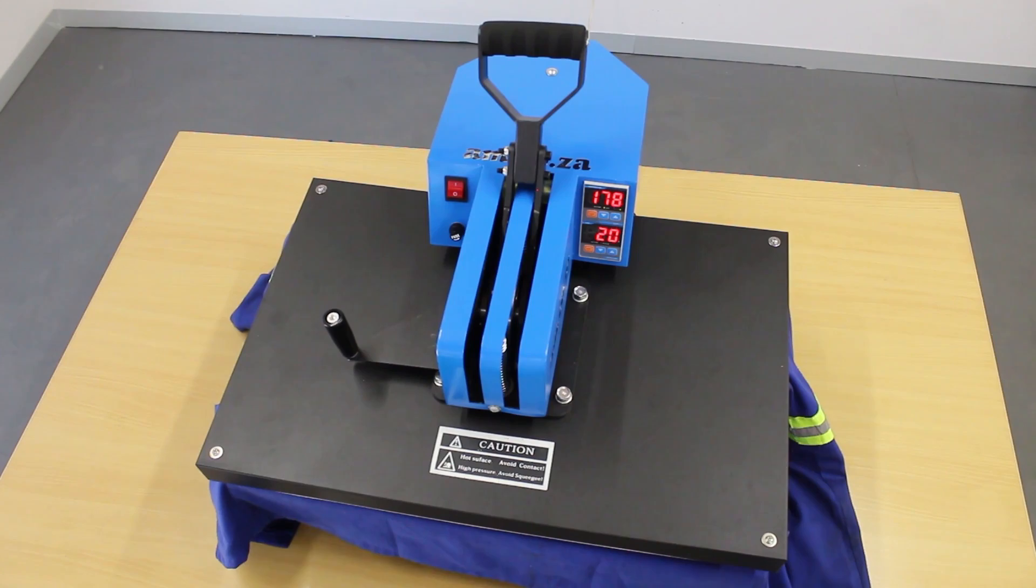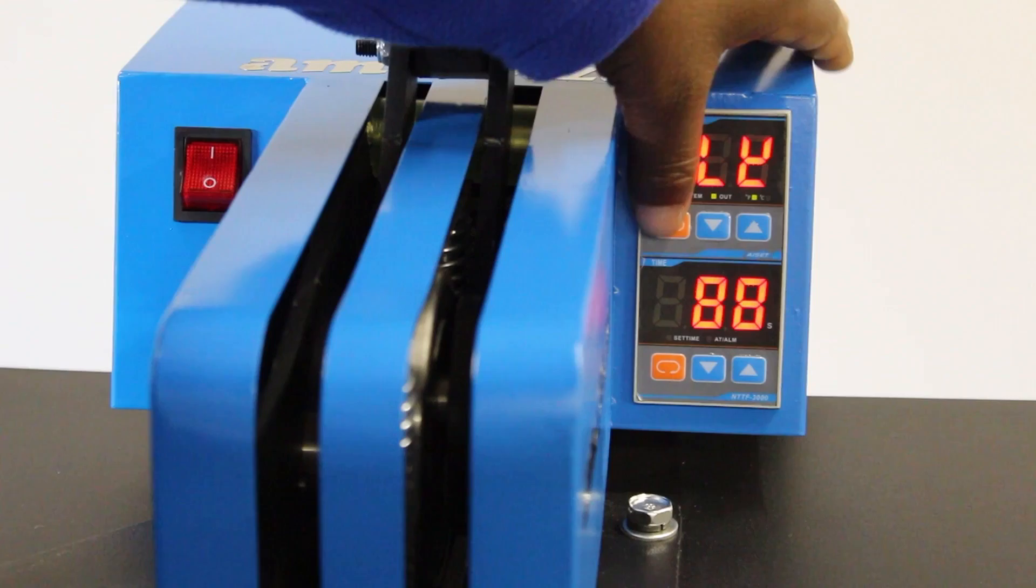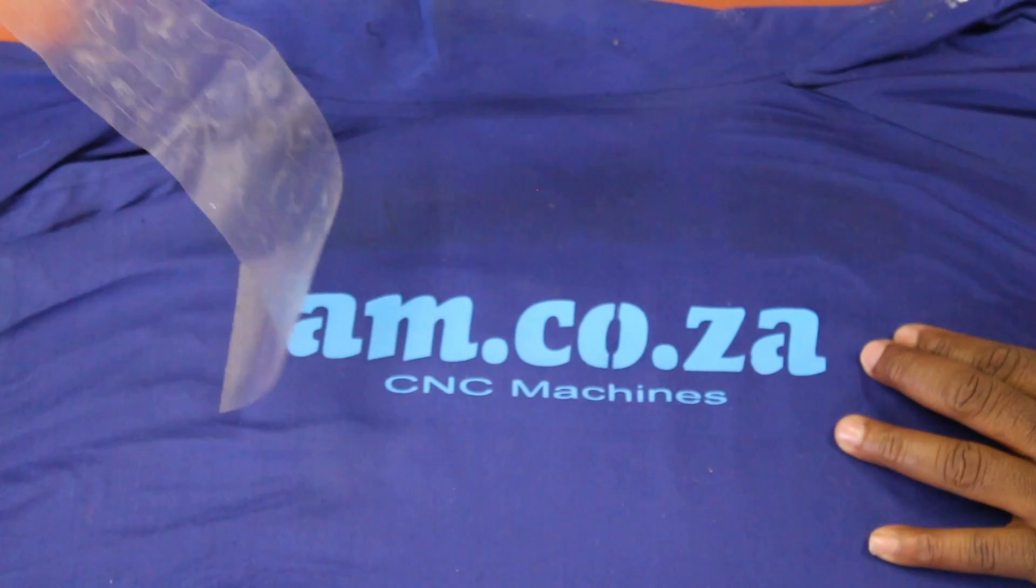The temperature can be set in Celsius or Fahrenheit. And this is useful because for some sublimation blanks or paper marks, it requires temperatures by Fahrenheit. And you can just change those settings accordingly without having to do the conversion all the time.